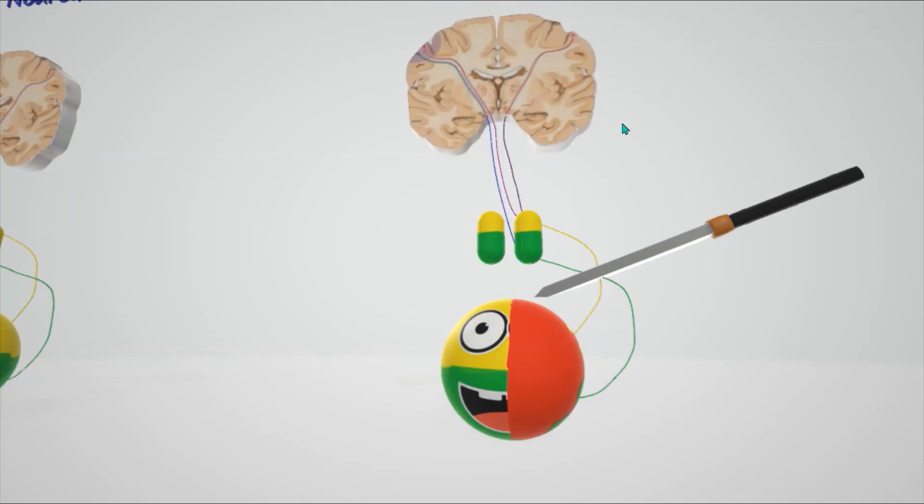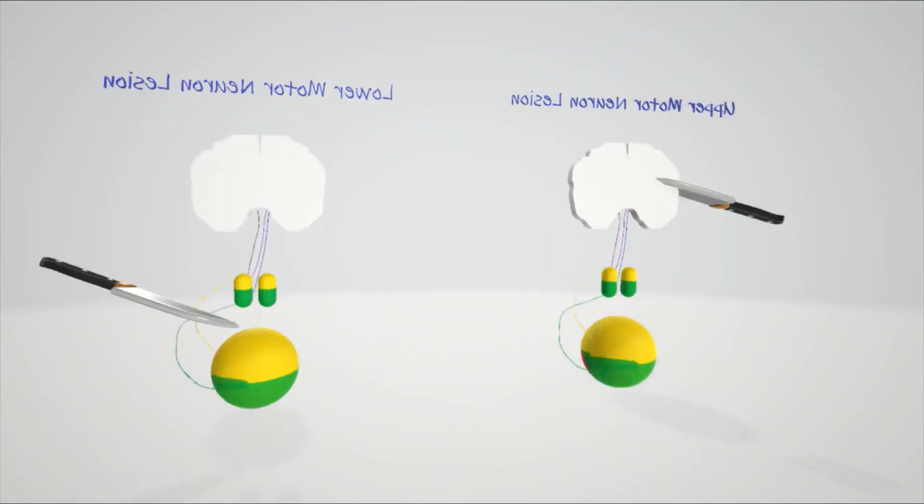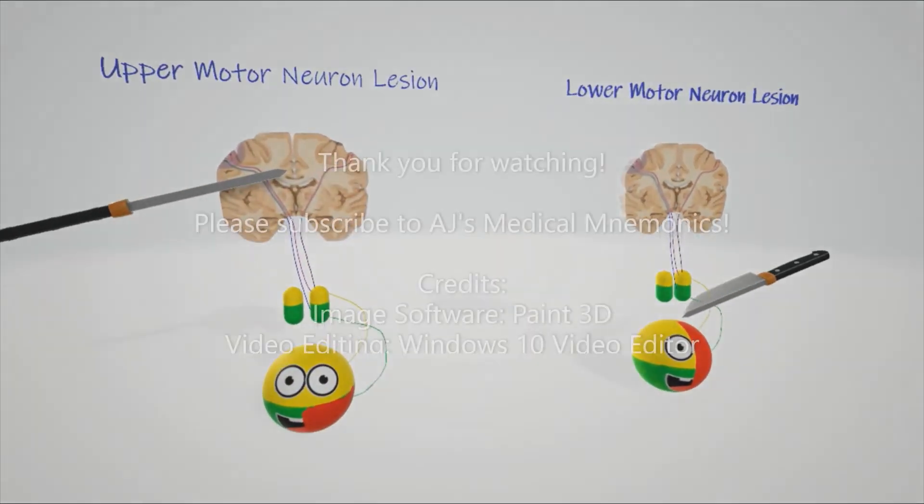It's interesting to note that there's also a loss of taste sensation to the anterior tongue in the lower motor neuron lesion. It's not so much of a mnemonic, more of a fun representation. All right, thank you for watching.